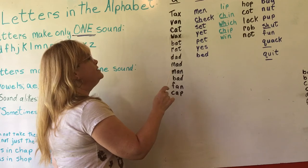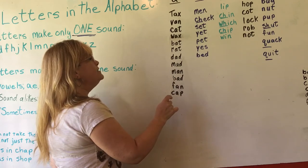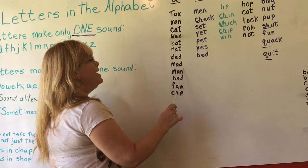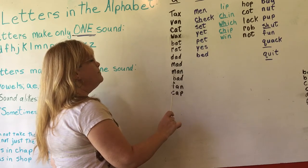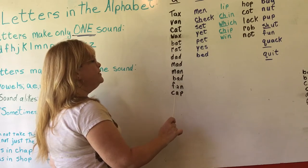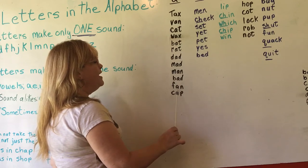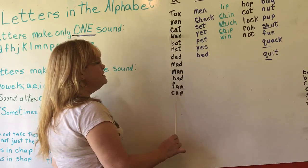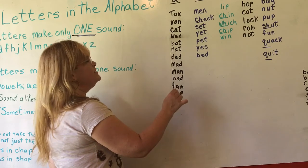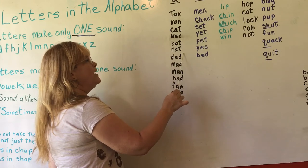R-A-T — rat. D-A-D — dad. M-A-D — mad. M-A-N — man. B-A-D — bad. F-A-N — fan. C-A-P — cap. R-A-T — rat.